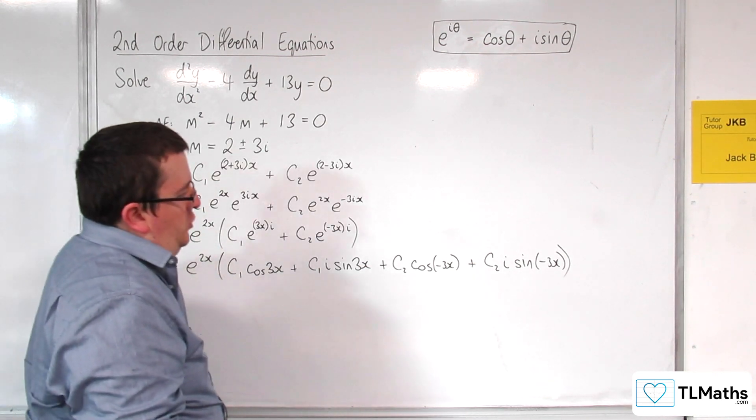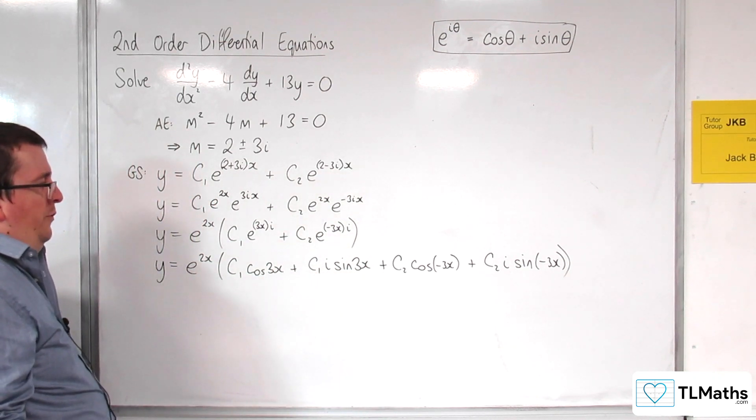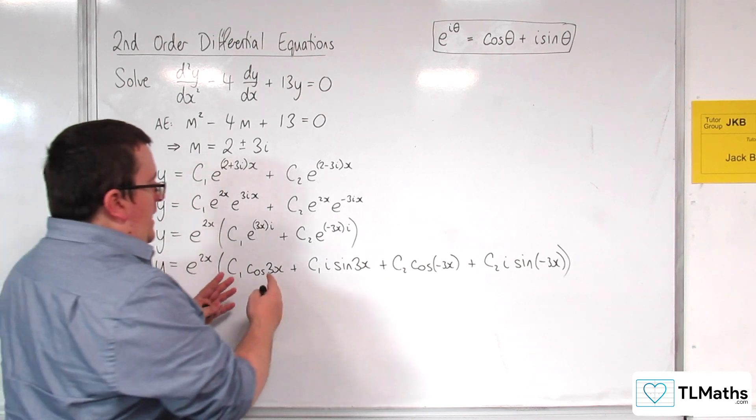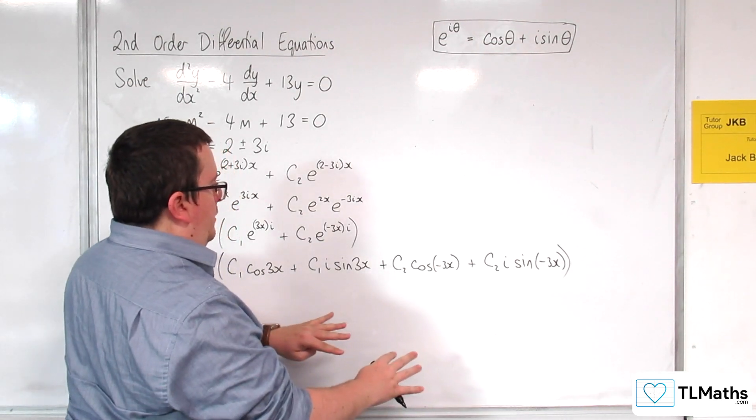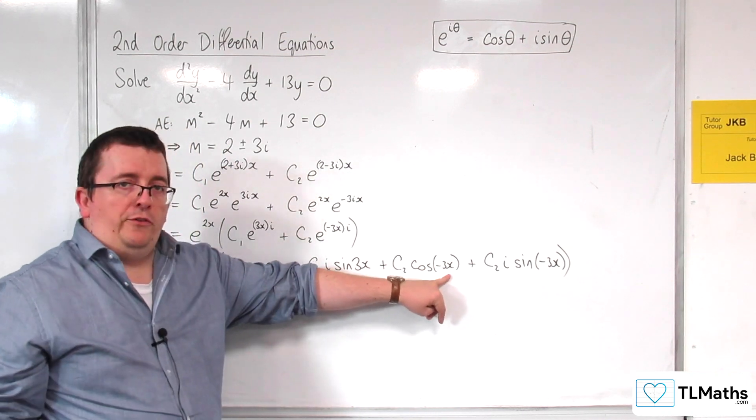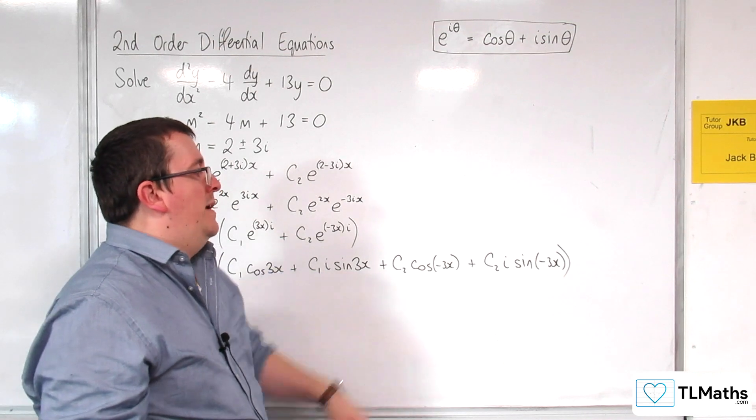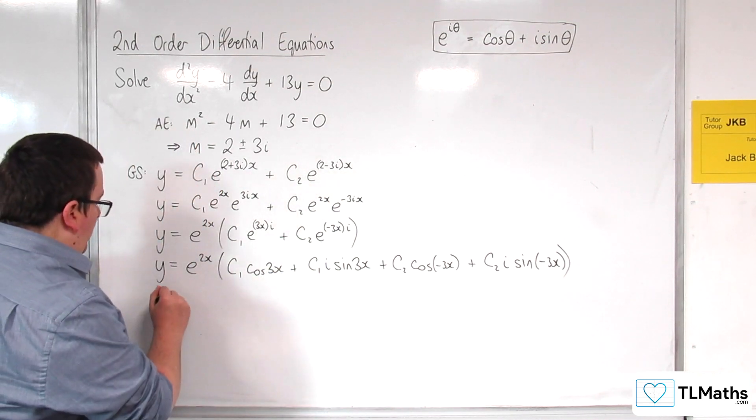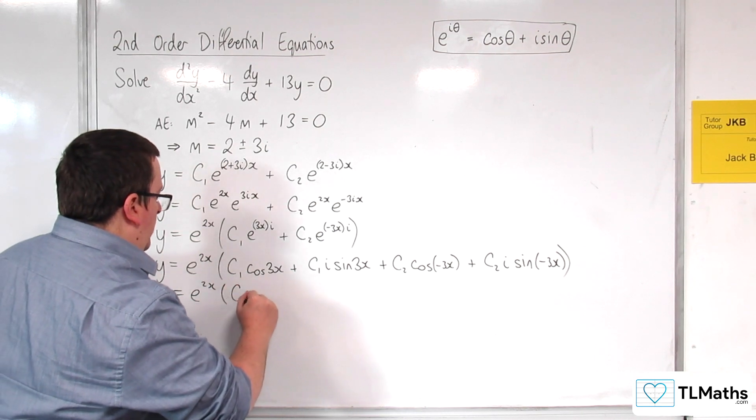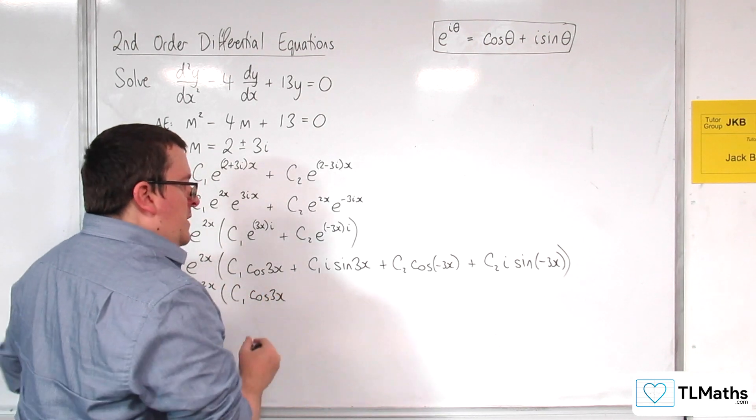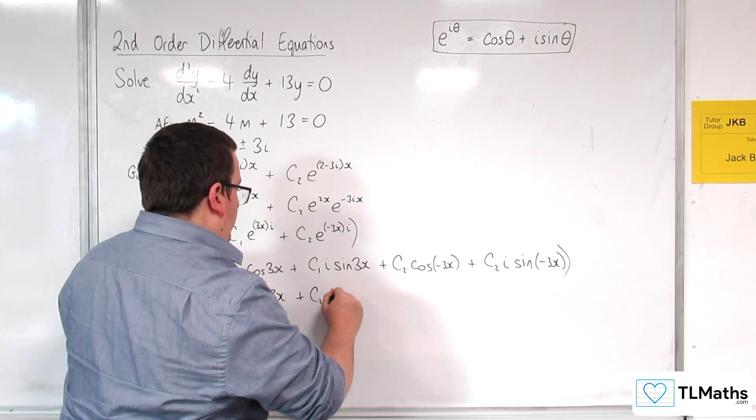So next stage of what I want to do is I would want to be able to group the real parts together and then have the imaginary parts over here. Now, cosine of minus 3x, because cosine is an even function, cosine of minus 3x is just cosine of 3x. So let's write that down next. So we've got the c1 cosine 3x. And from here, I'm going to have the plus c2 cosine of 3x.